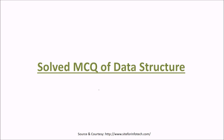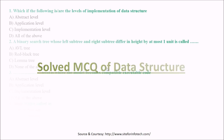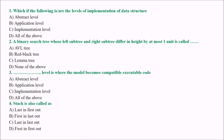We will take certain multiple choice questions on data structure. Let us start: which of the following is or are the levels of implementation of data structure? The answer is D — all the levels: abstract level, application level, and implementation level. These are the levels of implementation of data structure.